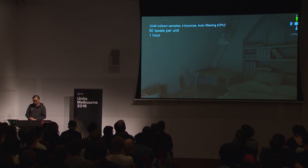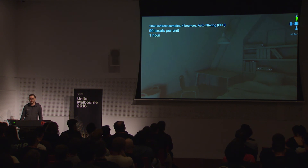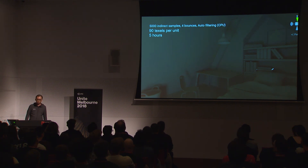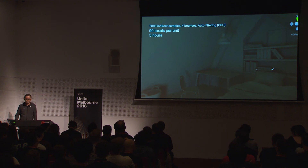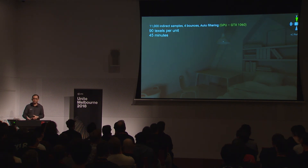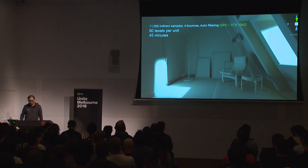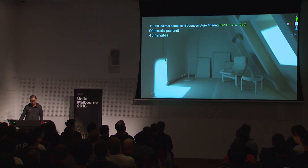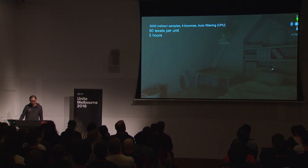Comparing CPU versus GPU progressive light mapper: on CPU at 90 texels per unit with 5000 indirect samples took five hours; on GPU at 90 texels with 11,000 indirect samples took only 45 minutes, achieving higher quality rendering with less noise.